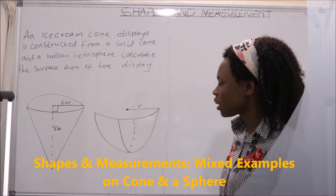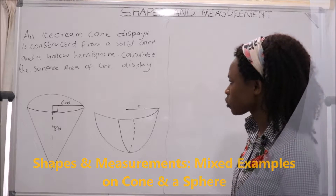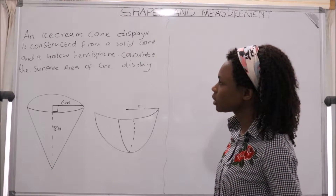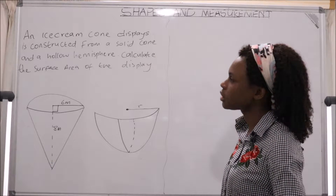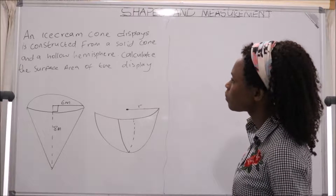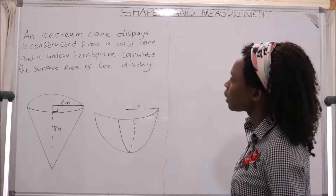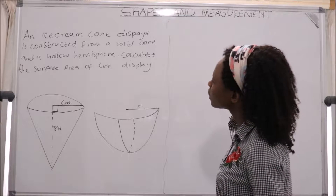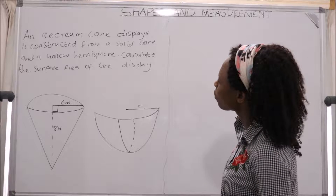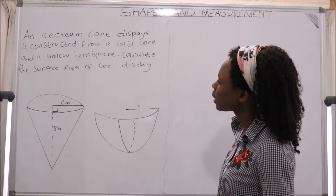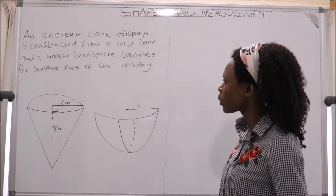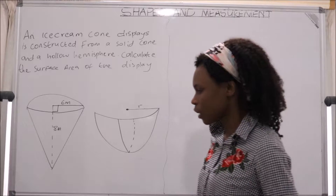What we have here is a cone and also a hemisphere. The question we are asked says that an ice cream cone display is constructed from a solid cone and a hollow hemisphere. Calculate the surface area of the display.